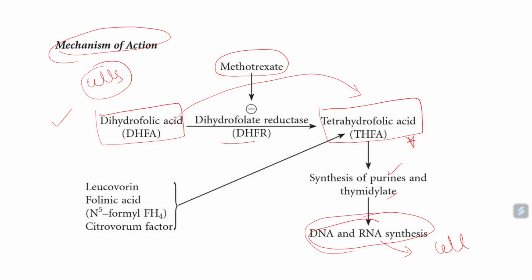Methotrexate inhibits the dihydrofolate reductase enzyme, and by doing so, it stops the conversion of dihydrofolate to tetrahydrofolate and stops all these downstream actions. The mechanism is simple and straightforward.